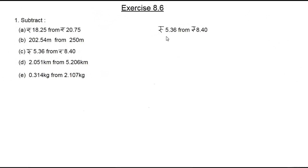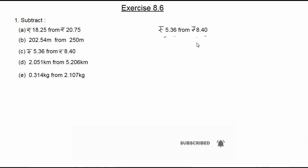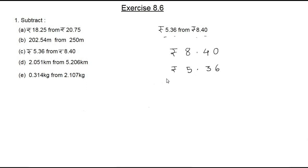The third question is: rupees 5.36 from rupees 8.40. We need to subtract 5.36 from the bigger number 8.40. Both numbers have one digit before the decimal point and two digits after the decimal point, so no need to add zeros. Let's write down the bigger number first: rupees 8.40, then rupees 5.36.